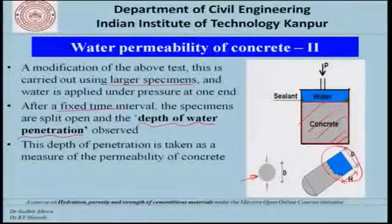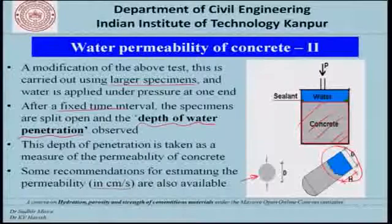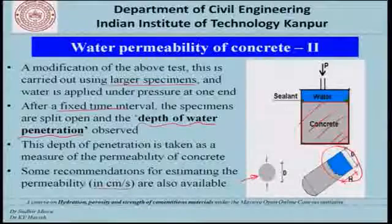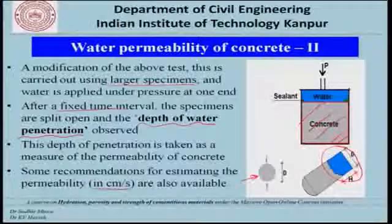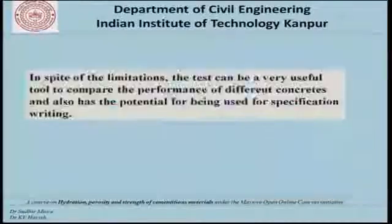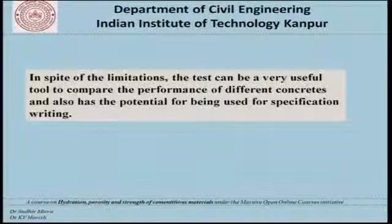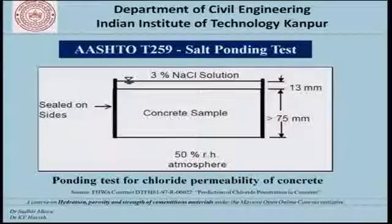This depth is taken as a measure of permeability, and recommendations for estimating permeability in centimeters per second or meters per second are available relating it to this penetration height. This is an indirect measure of the water permeability of concrete. Like the previous test, this test also has the potential for use in specification writing and for comparing the performance of different concretes.